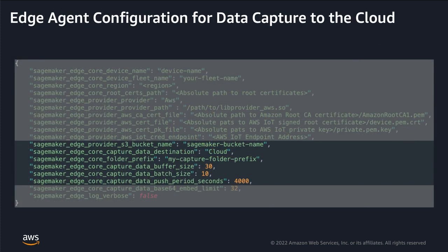In this example configuration, you can see that the Edge agent uses a local buffer for up to 30 capture requests. It will attempt to upload the capture data to S3 after 10 requests or 4,000 seconds, whichever comes first. We recommend to have the batch size set to at most half the buffer size. You can use a data buffer and data push period to address issues with devices that have less reliable and frequent internet connection, but you have to consider the amount of memory that the buffer requires on your device and the fact that the buffer is a non-persistent memory.